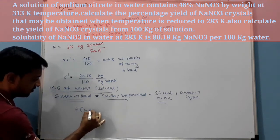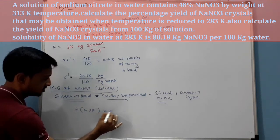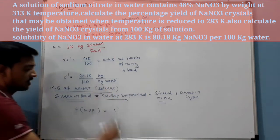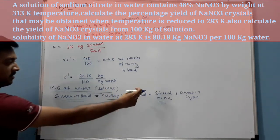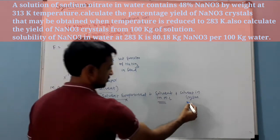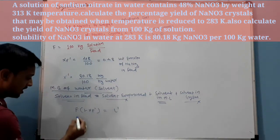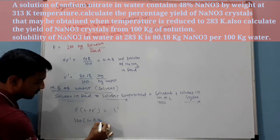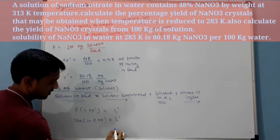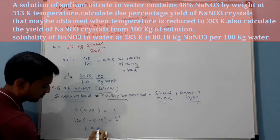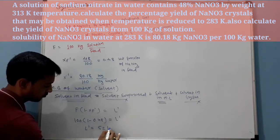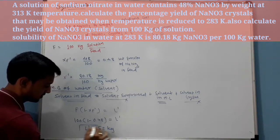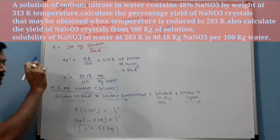So solvent in feed F times 1 minus XF dash is equal to L dash, solvent in mother liquor. So 100 times 1 minus XF dash 0.48 is equal to L dash. So L dash is equal to 52 kg.